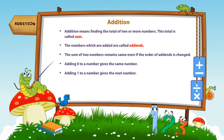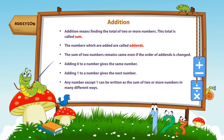Adding one to a number gives the next number. Any number except one can be written as the sum of two or more numbers in many different ways.